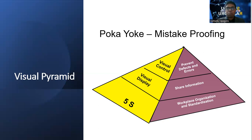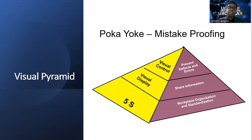Likewise, in the manufacturing environment also, we have to implement some visual controls. It may be a light or any signal. But when it is switched on or activated, the people's behavior has to be changed.